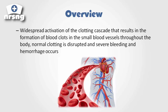What happens with DIC is there's a systemic activation of the clotting cascade — not just within one portion or where there's an injury, but widespread activation throughout the body. This results in little tiny clots forming in our microvascular system. We end up using up all of our clotting factors, so normal clotting is disrupted and then severe bleeding and hemorrhage occurs.